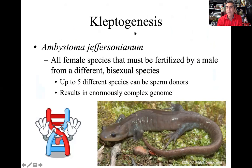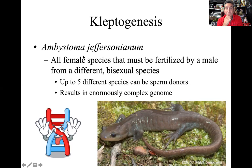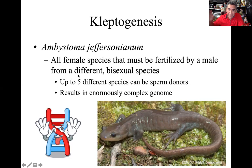I want to bring up kleptogenesis. Kleptogenesis is unique to one particular species: Ambystoma jeffersonianum. All individuals of this species are female — 100% female, no males of this species exist. But this all-female species must be fertilized by a male from a different bisexual species. 'Klepto' means to steal, like a kleptomaniac. So kleptogenesis means reproducing by stealing sperm from a male of another species. It would be like if only human females existed and they selected sperm from chimpanzees, orangutans, or gorillas.